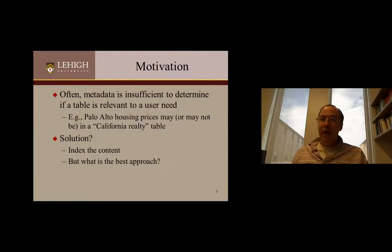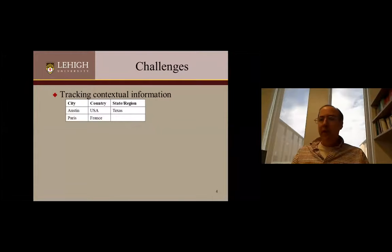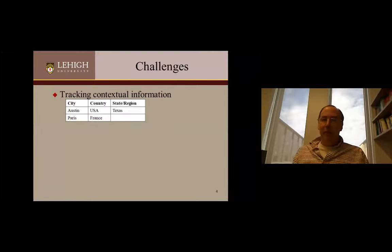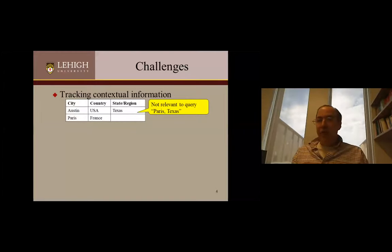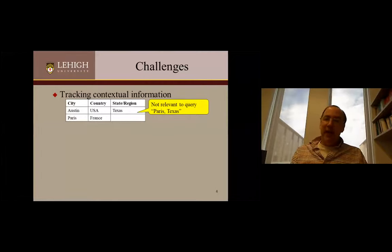What's the right approach for indexing the content? One challenge: imagine a table that had cities like Austin, Texas and Paris, France. If somebody has a query like I'm looking for Paris, Texas, this table is probably not relevant because Paris and Texas are in different rows — they're in different contexts. So we need to consider the context of the information when doing this.